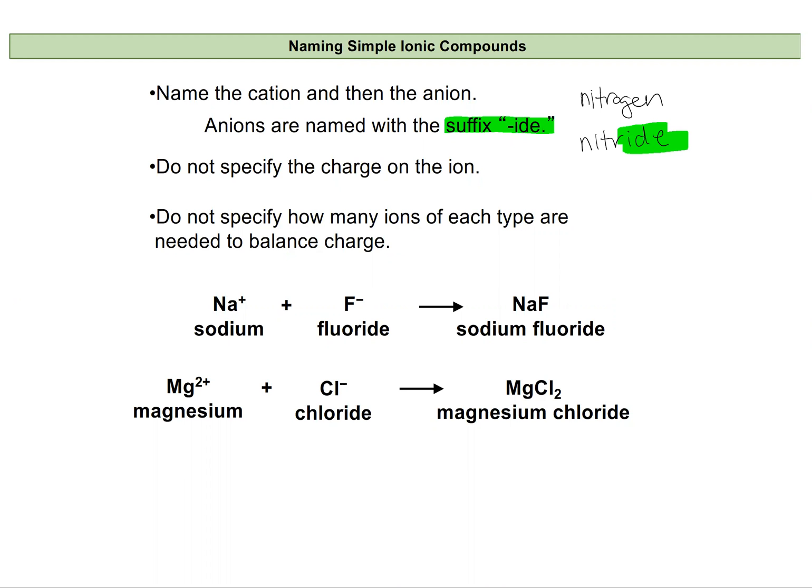We don't specify the charge on the ion when we name it, because in theory someone can figure that out on their own just using a periodic table. We don't specify the number of ions either, because you could figure that out just by balancing the charge, as we've done before.